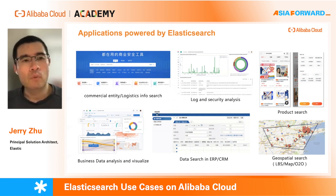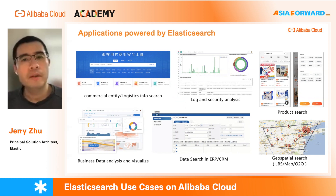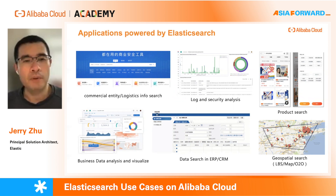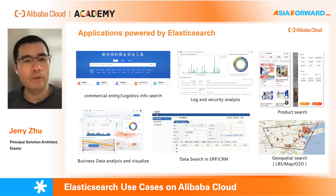Because Elasticsearch is a search engine, most of the time it sits behind your applications to provide search functionality. The first application area is search — it searches a lot of information for you. For example, if you want to search for a commercial entity on a website.